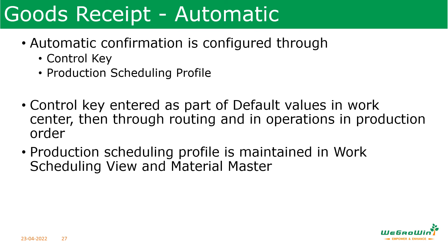Automatic goods receipt can be facilitated through two methods: one is through the control key, another is through the production scheduling profile. Please refer back to the discussions on routing where we discussed the control key in detail, and also the work scheduling view where we discussed the production scheduling profile. Both have settings for automatic goods receipt. Once facilitated, when you do the order confirmation, the goods receipt from the production order will happen automatically. The control key is maintained in the work center, carried to the routing, and the production scheduling profile is maintained in the Material Master work scheduling view.